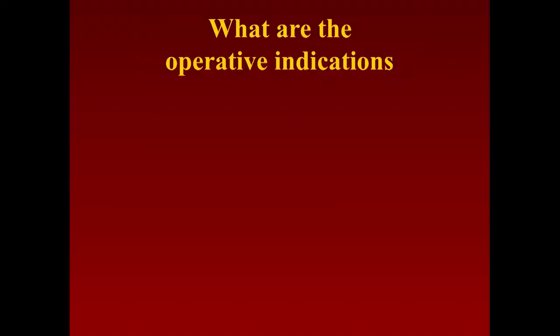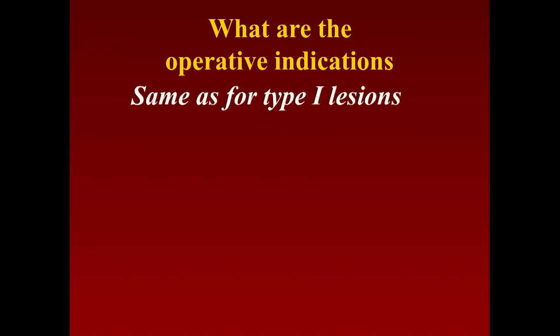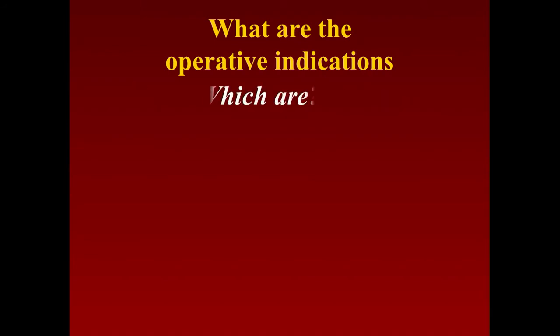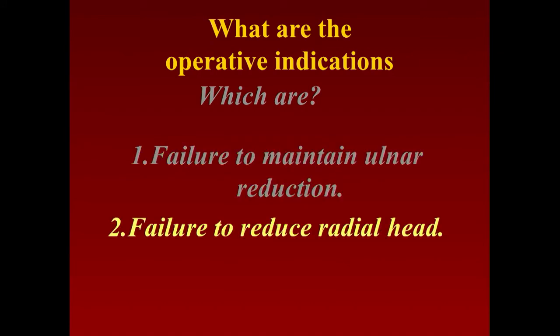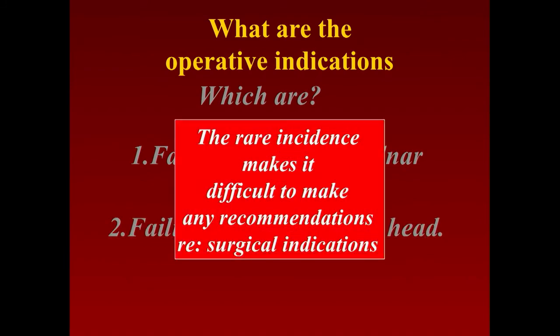Once the fracture is reduced, confirm the quality of reduction with an arthrogram — don't leave the operating room until you confirm concentric reduction of both radius and ulna. Operative indications for Type 2 are similar to Type 1: failure to maintain ulnar reduction, or failure to reduce the radial head. However, because this is such a rare injury, definitive recommendations are difficult to make.